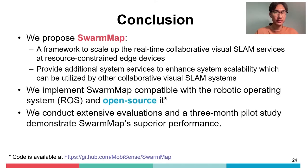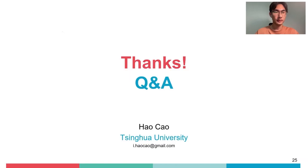In summary, we propose SwarmMap, a framework to scale up real-time collaborative Visual SLAM services. As resource-constrained edge devices, we provide additional system services to enhance system scalability, which can be utilized by other collaborative Visual SLAM systems. We implement SwarmMap compatible with the Robot Operating System and open-source it. We conduct extensive evaluation and a 3-month pilot study to demonstrate SwarmMap's superior performance. Thank you.